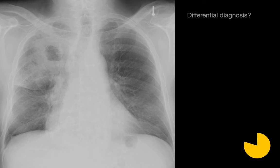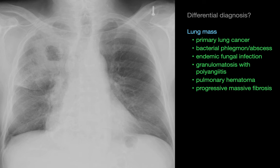What's your differential diagnosis for this case? The imaging finding is in the upper right lung and may be either a cavitary mass with indistinct margins or cavitary consolidation. The differential diagnosis for a lung mass includes almost every item, all of which can cavitate, with the exception of PMF.